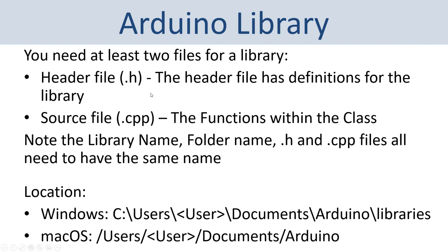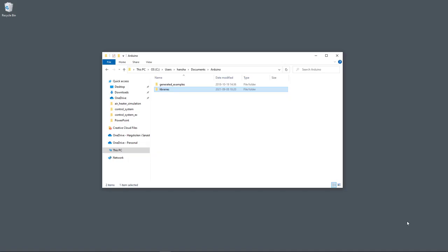To make an Arduino library you need to create two files: a header file with extension .h, and a source file with extension .cpp for C++. The library name, folder name, .h file, and .cpp file all need to have the same name. These files need to be placed in a specific location on your hard drive — the default location on Windows is C:/Users/[username]/Documents/Arduino/libraries. I have already made this Arduino library, so let's take a closer look. I navigate to that location, find the libraries folder, and inside it my library called control.